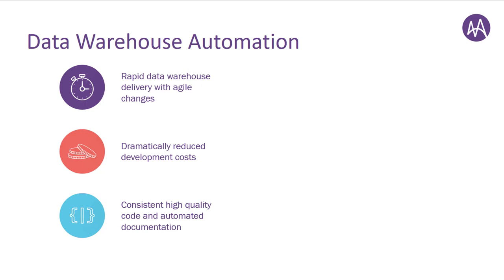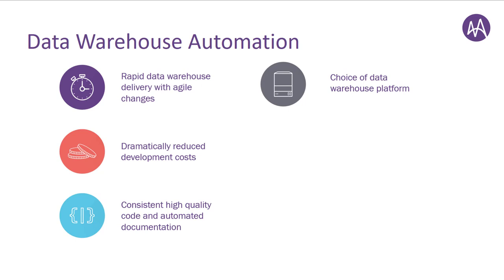Next, data warehouse automation gives you your choice of data warehouse platform. One of the problems with traditional data warehouse development was that after you spent all this time writing the code to extract data from your source systems to your destination data warehouse, you're more or less locked into your data warehouse platform. So if you're using SQL Server, for example, to house your data warehouse and you wanted to move to a cloud-based platform like Amazon Redshift, it would take you months or perhaps years to rewrite all the code from scratch. With data warehouse automation, the transform logic is built in using metadata, and then the platform will use this metadata and logic to write the specific code required for your target data warehouse platform. So if you want to switch to a different platform, the data warehouse automation tool will rewrite all the ELT or ETL code for you, optimized for the new platform.